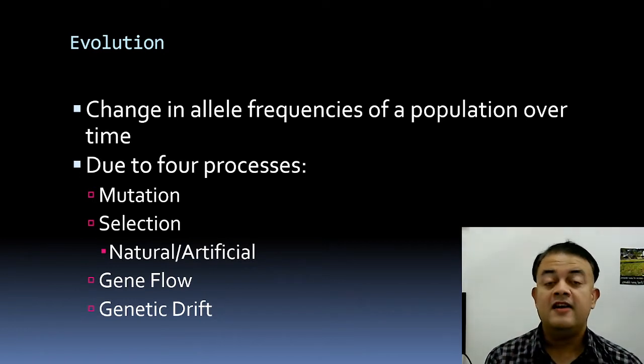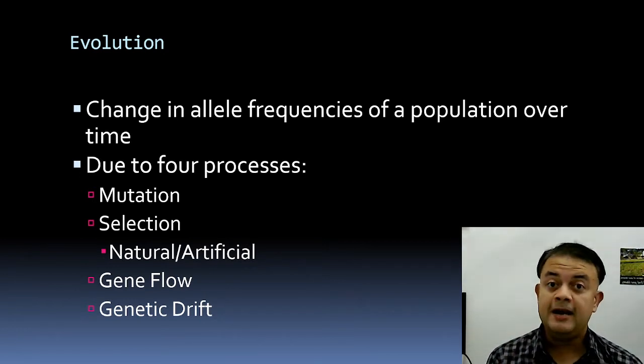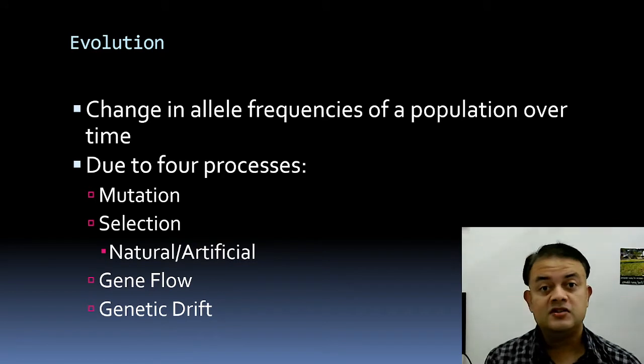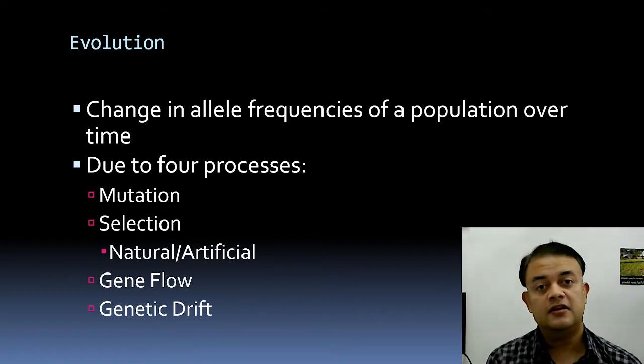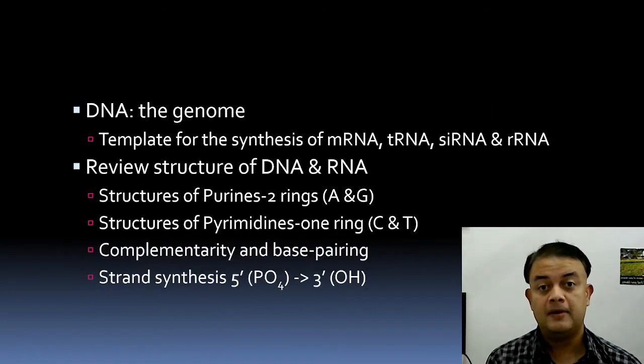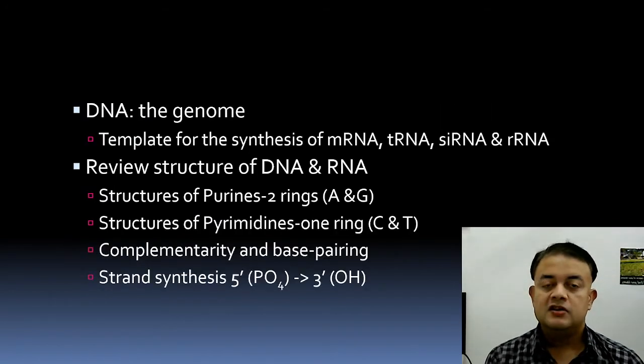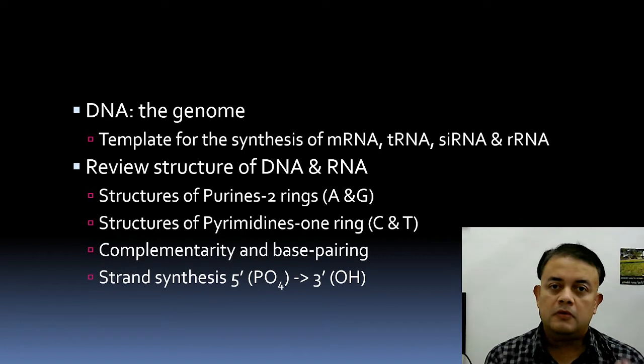Genetic drift plays a major role when the effective population size is very low. Under normal circumstances with high population size, genetic drift doesn't play much of a role.